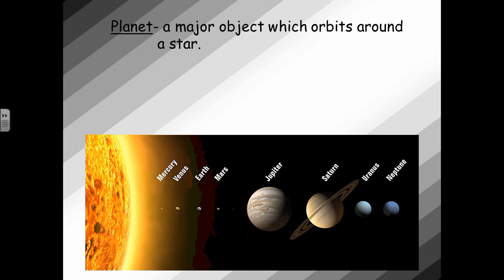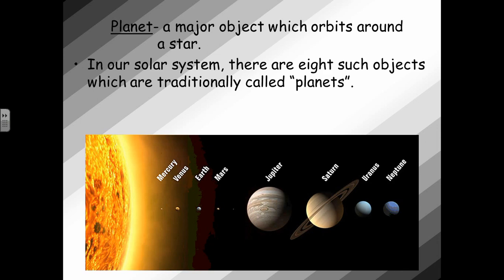Planets are a major object which orbits around a star. The sun is the star in our solar system, and our planets orbit around the sun. In the solar system, there are eight such objects, which are traditionally called planets.